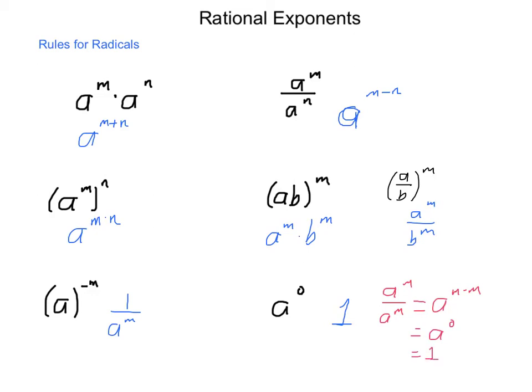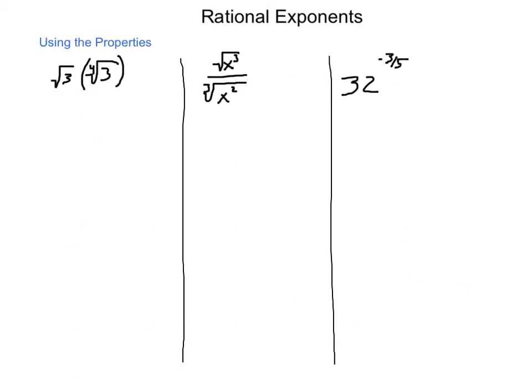So how can we take these rules and apply them into problems? If I have the square root of 3 times the fourth root of 3, in order to simplify this, I'm going to convert both into exponent form. So I have 3 to the 1 half power times 3 to the 1 fourth power. While multiplying items of a common base, you add your exponents.